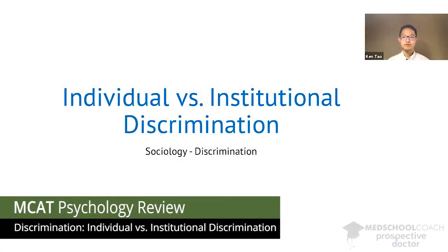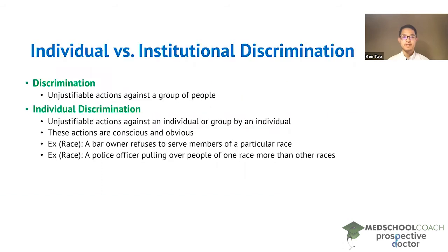In this video we're going to go over individual versus institutional discrimination. Discrimination is unjustifiable actions against a group of people. When you refer to individual discrimination, it is discrimination by an individual.